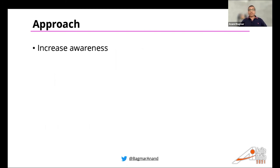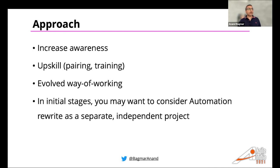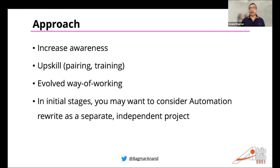The approach to get there: increase awareness within the team about the challenges and better ways of doing things. Start upskilling, pairing, and training team members. Evolve your overall way of working — it's not just about people writing code, it's all roles working in synergy. In the case study examples, we carved out a dedicated team to rewrite or reimplement the automation as an independent project. We had a huge backlog, knew the challenges, had an objective. Then eventually you merge this way of working into the ongoing day-to-day basis, which is how you build and revamp existing automation and start contributing to new changes.